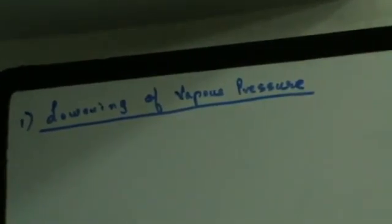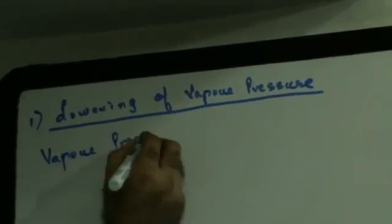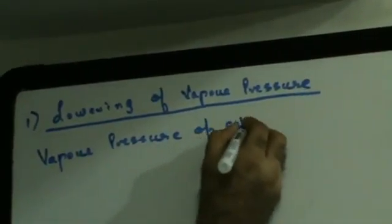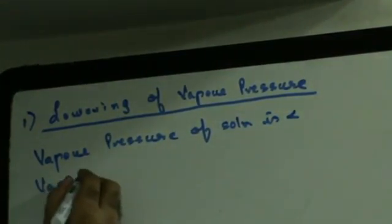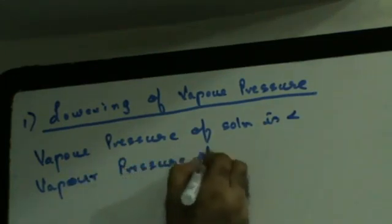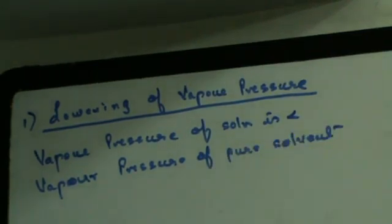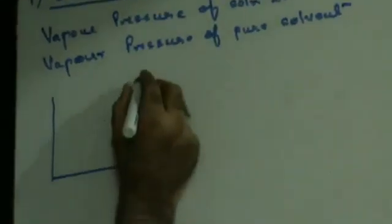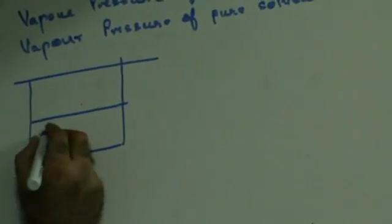What is lowering of vapor pressure? We know that the vapor pressure of a solution is less than the vapor pressure of the pure solvent. Let's try to see why. Vapor pressure, as we know, depends upon the surface area — we have discussed this in the previous lecture and seen this diagram as well.